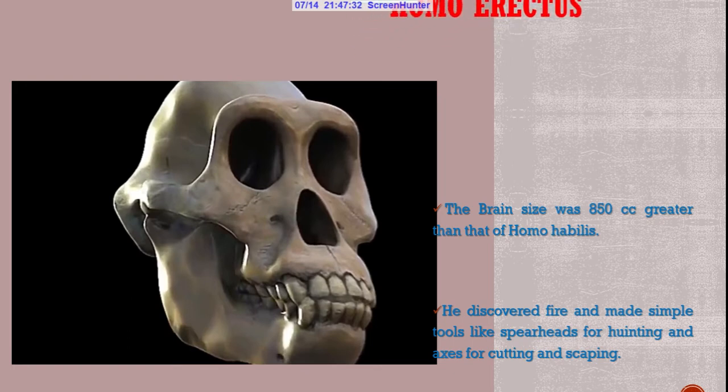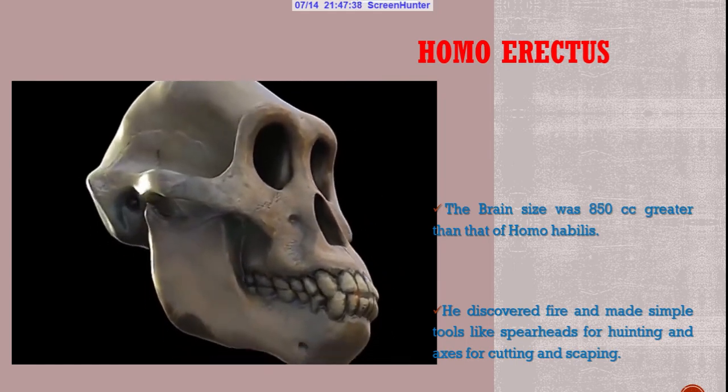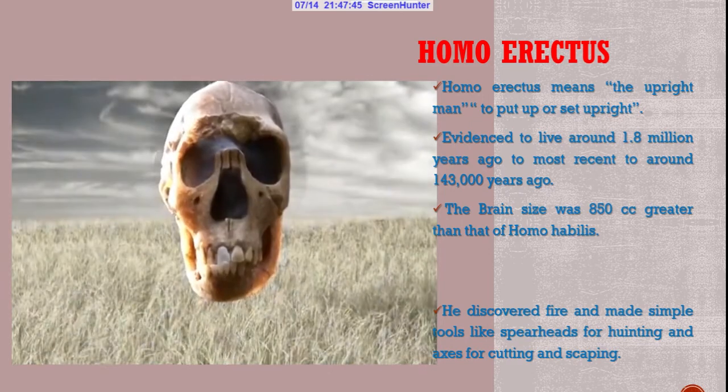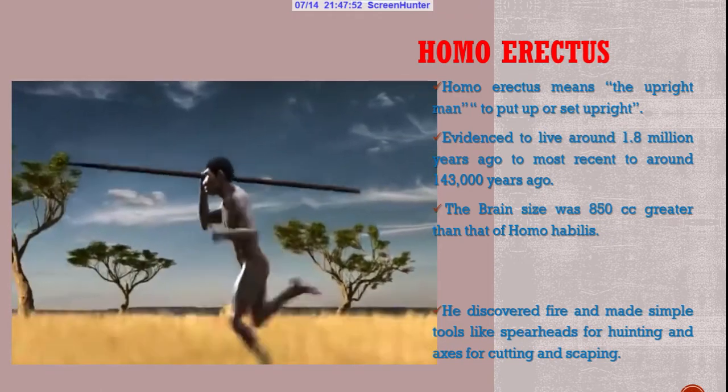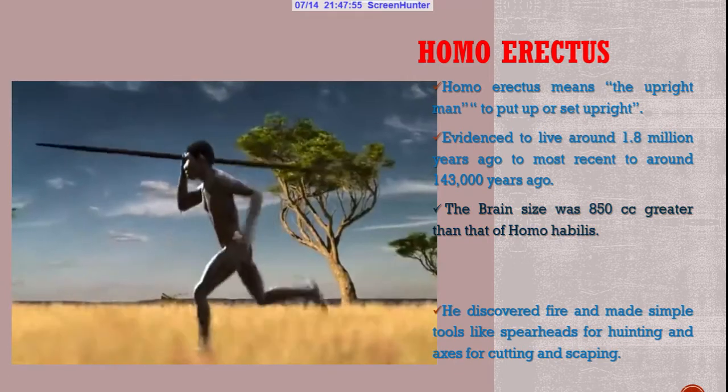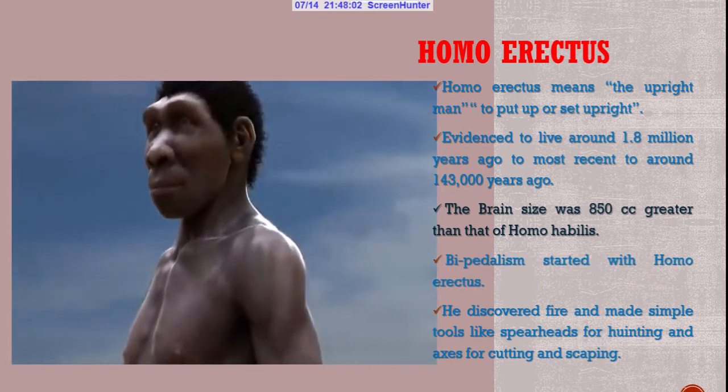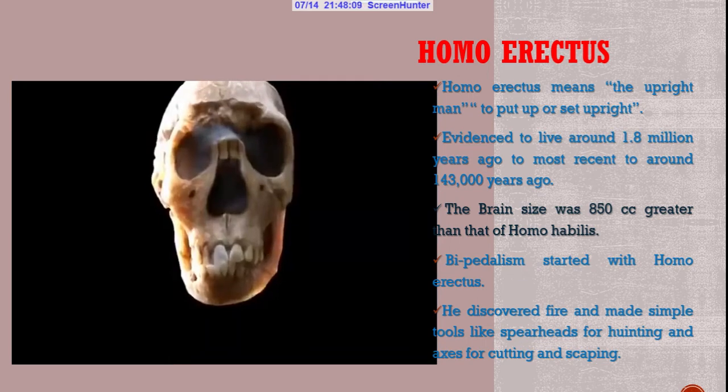Another stage is Homo erectus. Homo erectus is said to live between 1.8 million years ago to most recent around 143,000 years ago. He had a brain size of 850 cranium capacity, greater than that of Homo habilis. He was bipedal and discovered fire, making life simpler during that period. The main economic activity was hunting and gathering.